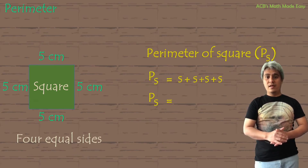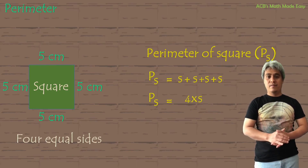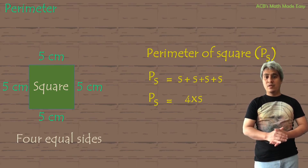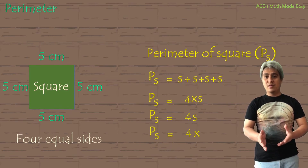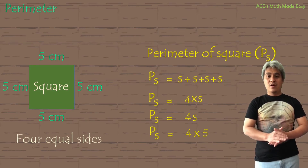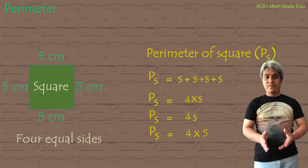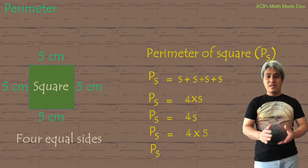So our formula can be 4 times S. The perimeter of square is 4 times — what is the value of S? Yes, 5. So PS equals 4 times 5. So our answer is 20 centimeters. It is the same if we add the 4 S's.